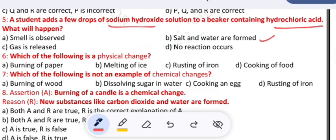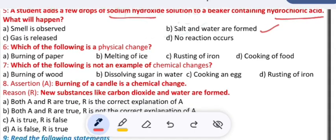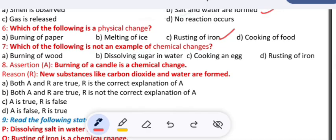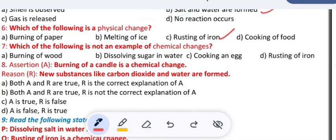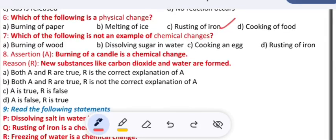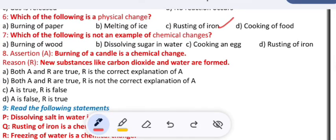Which of the following is a physical change? A) burning of paper, B) melting of ice, C) rusting of iron, D) cooking of food. Rusting of iron: iron reacts with water and oxygen present in the atmosphere to give rusting of iron. Question 7: which of the following is not an example of a chemical change? A) burning of food, B) dissolving sugar in water, C) cooking an egg, D) rusting of iron.